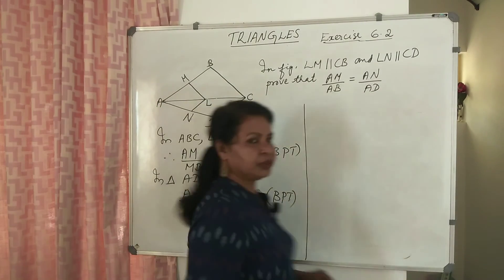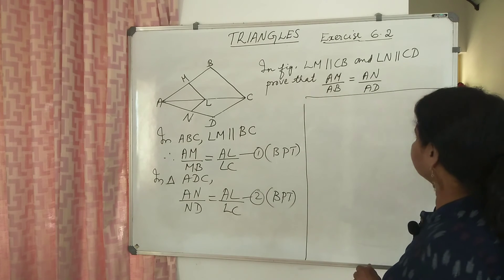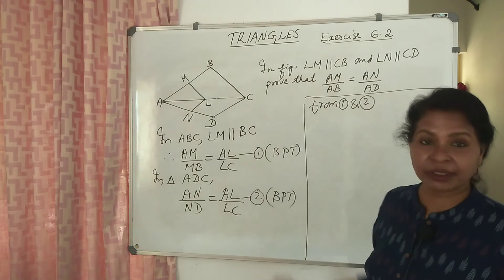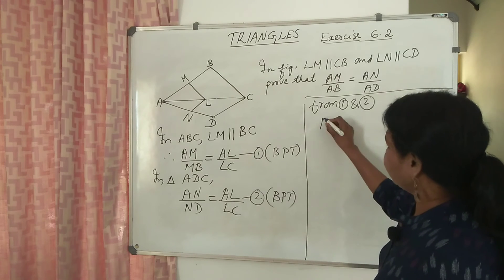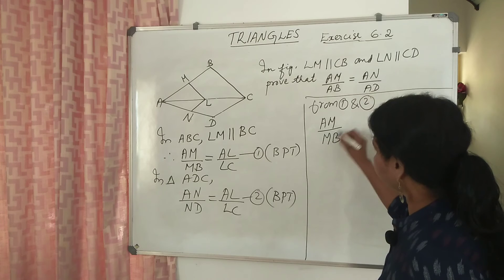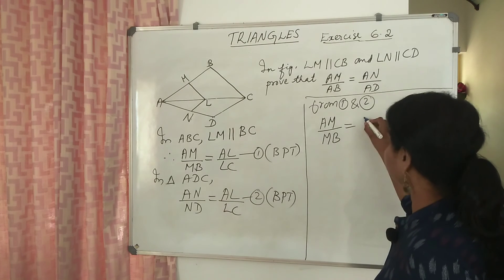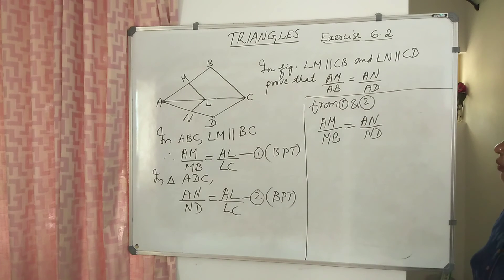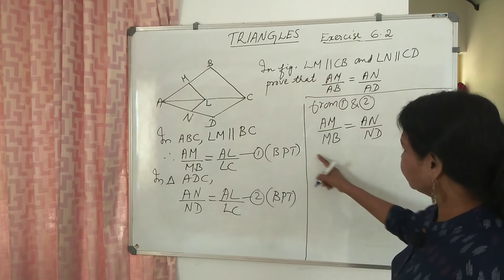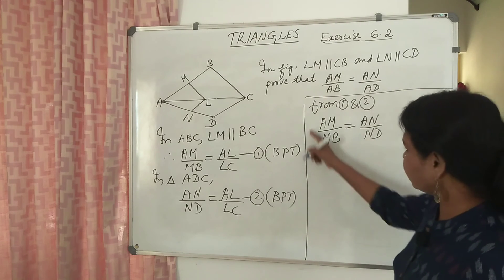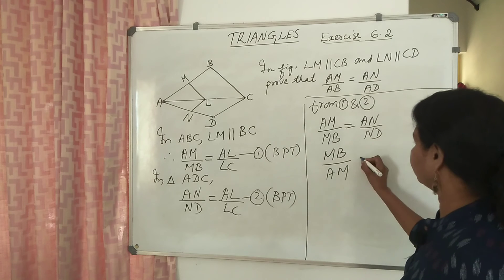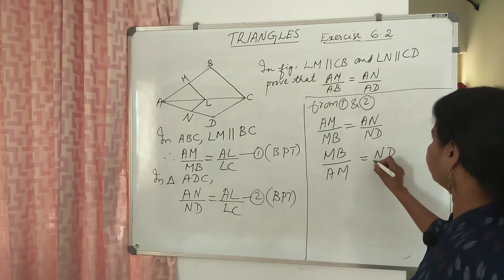From equations 1 and 2, AM divided by MB equals AN divided by ND. Adding 1 to both sides: MB plus AM divided by AM equals ND plus AN divided by AN. That is, AB divided by AM equals AD divided by AN. Therefore AM divided by AB equals AN divided by AD. We can also write the reciprocal: MB divided by AM equals ND divided by AN.